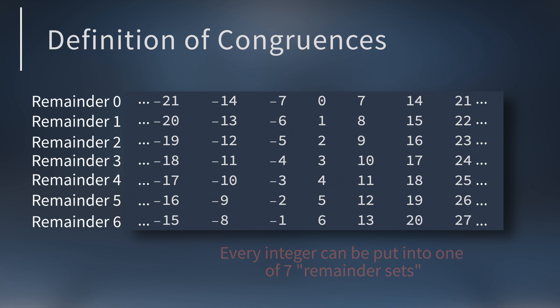In each set, the integers are 7 apart, but the patterns go much, much deeper. If you pick any number from one set and add it to an integer from another set, then the sum is always in the same set. Try this a few times to feel the excitement yourself.